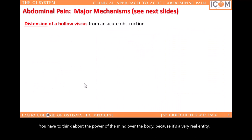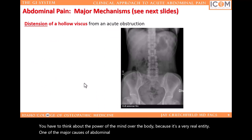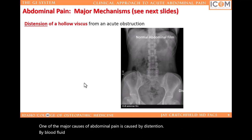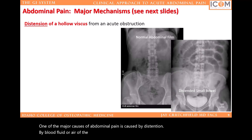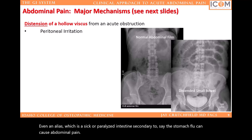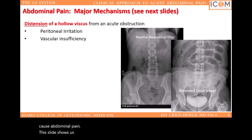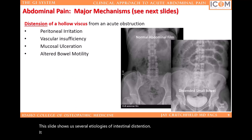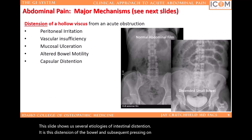One of the major causes of abdominal pain is caused by distention by blood, fluid, or air of the intestine. Even an ileus — which is a sick or paralyzed intestine secondary to, say, the stomach flu — can cause abdominal pain. This slide shows us several etiologies of intestinal distention. It is this distention of the bowel and subsequent pressing on the parietal peritoneum that causes the abdominal discomfort.